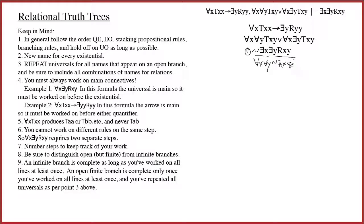That gives me: for all x, for all y, tilde Rxy. At this point I have to think about what I have above. I have an arrow and a wedge as main connectives. I cannot work on the quantifiers on either of those formulas — you have to work on the main connectives. Arrows and wedges are both branching rules, but I don't like to branch if there's any stacking I can do. Here are two universals, which would be stacking, but one of the most important things is to hold off on universals as long as possible.